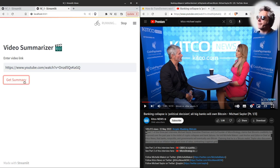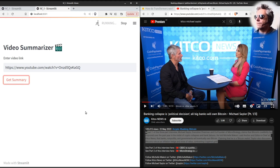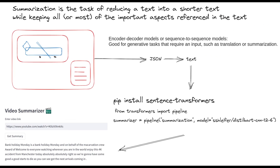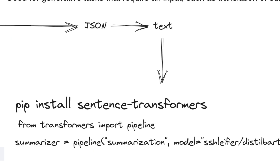You can see the link is running okay. While that's going on, I just want to quickly show you a diagram of how it all works. We've got the YouTube transcript, which we extract as JSON, we parse out the text, and then we do 'pip install sentence-transformers' and 'from transformers import pipeline' — that's the key import.